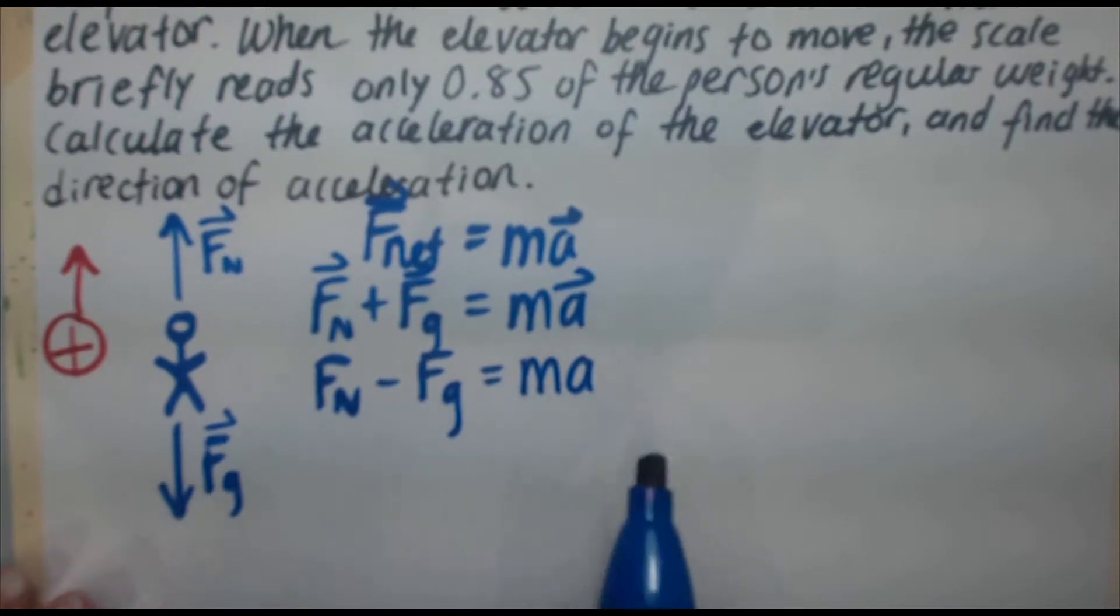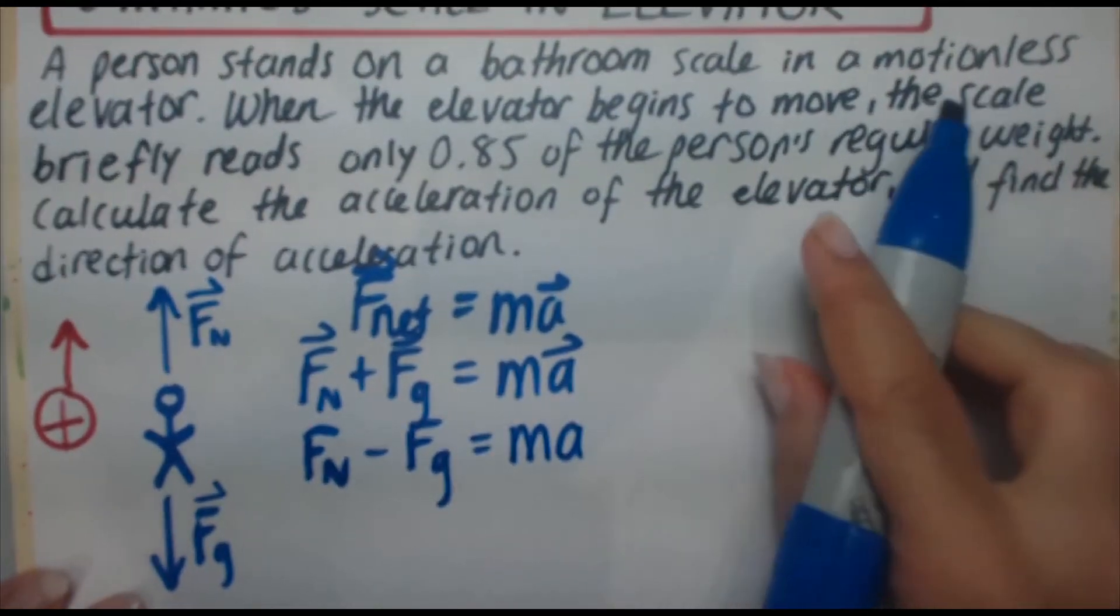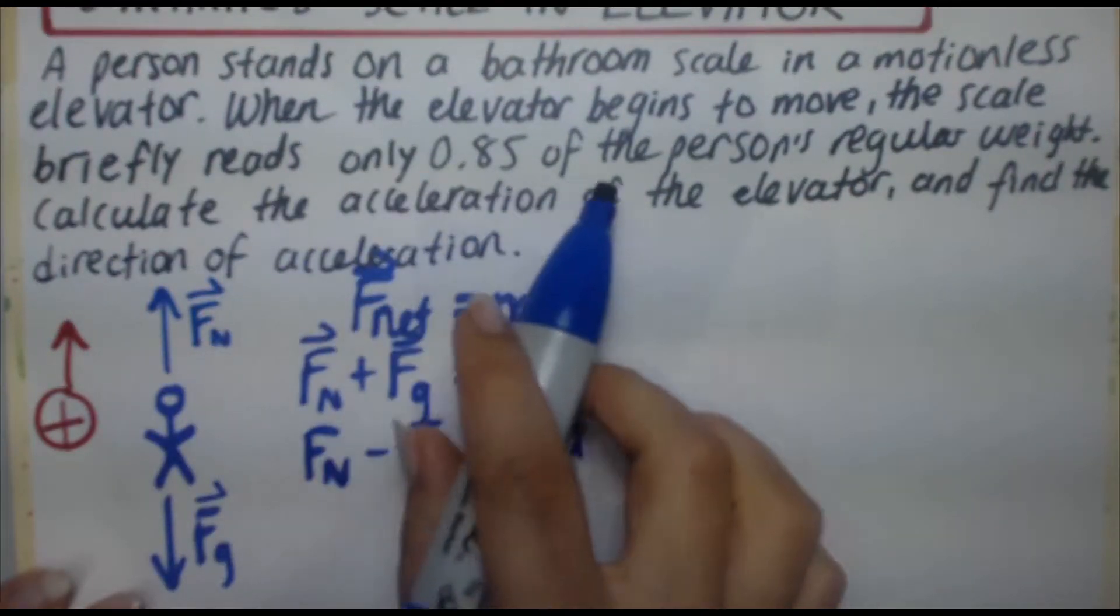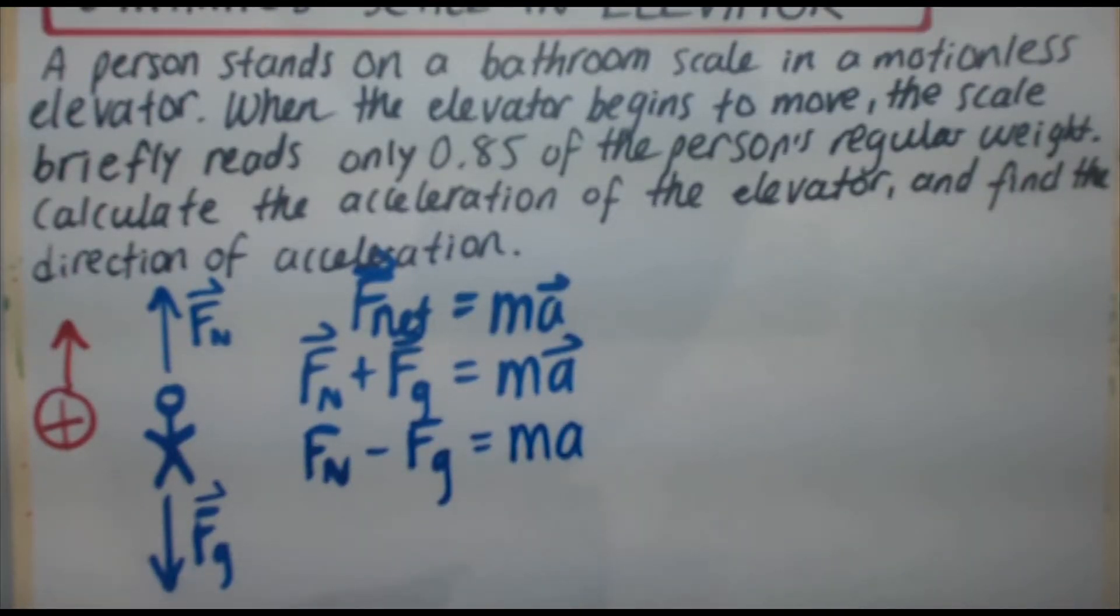Okay, now in the question, it tells you that the scale briefly reads only 0.85 of the person's regular weight. Now, when you stand on a scale, your weight pushes down on the scale. The scale pushes back up on you and the amount by which it pushes back up on you is the normal force. And so, that's the weight it gives you.